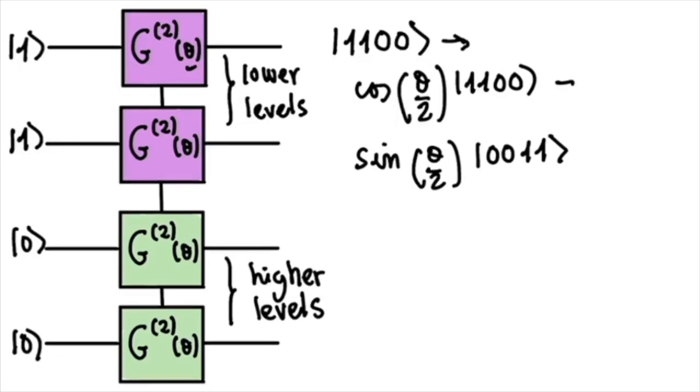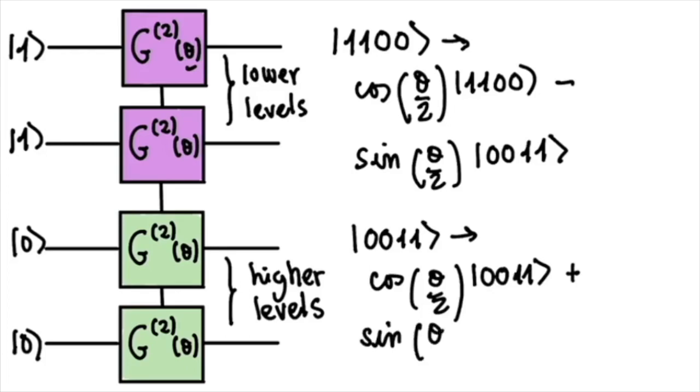If we take these wires where the purple gates are as the lower energy levels, and these wires where the green gates are as the higher energy levels, then basically what this gate is doing is taking the lower energy electrons into a superposition with themselves and the higher levels. This is not the only thing that this gate does. It also de-excites. So if the initial state was 0, 0, 1, 1, it would take it to cosine theta halves 0, 0, 1, 1, plus sine theta halves, 1, 1, 0, 0.